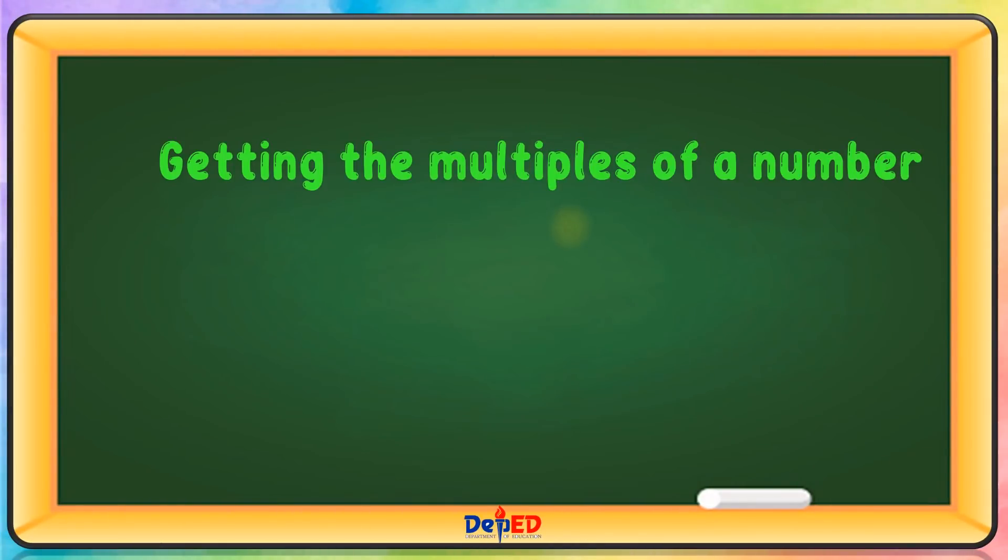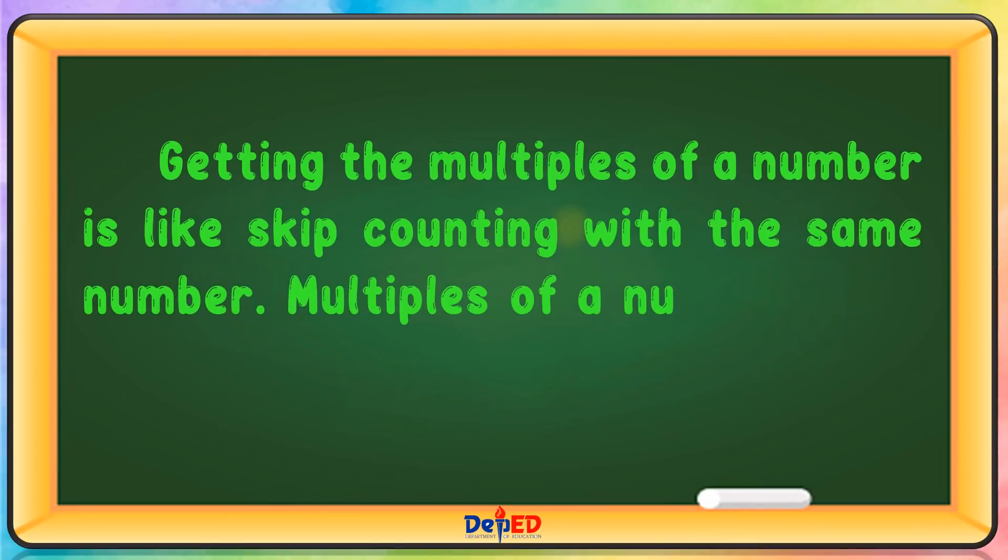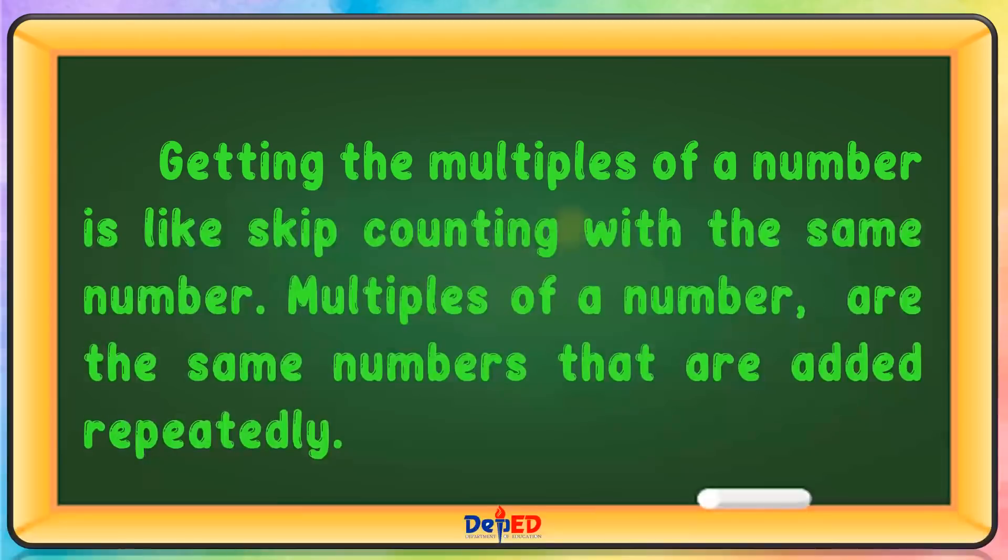Getting the multiples of a number is like skip counting with the same number. Multiples of a number are the same numbers that are added repeatedly.